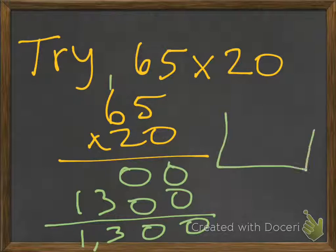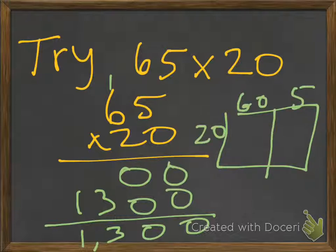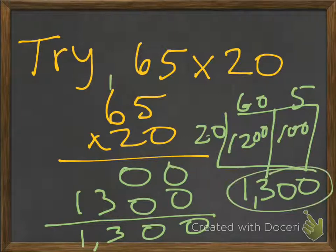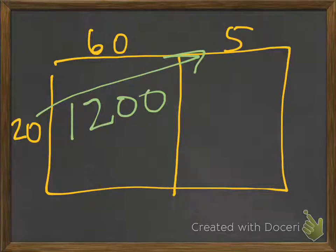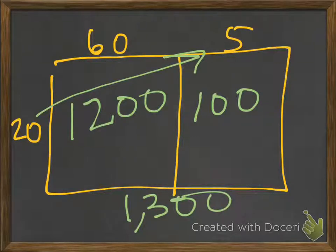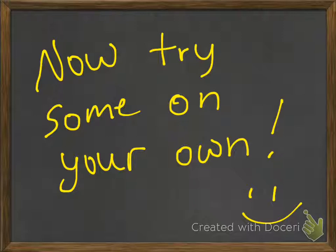And you could have done it this way too — you can split it up: 20 over here, and then 60 and 5. You're going to get 1,200 here from 60 times 20, and then 20 times 5 gives you 100. Add that up and you still get 1,300. So no matter which method you use, the answer is 1,300. Now try some on your own. Good luck.